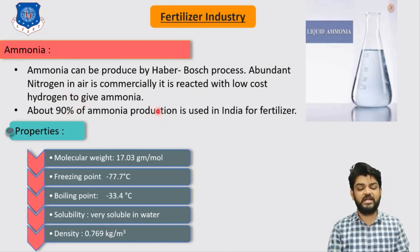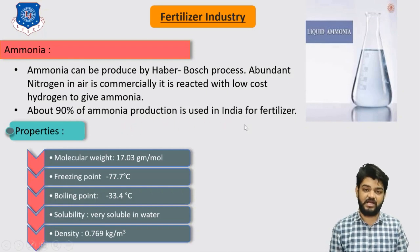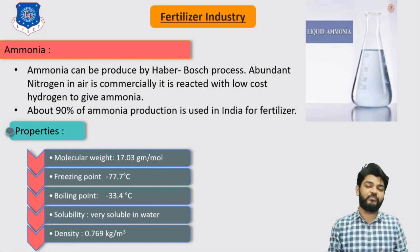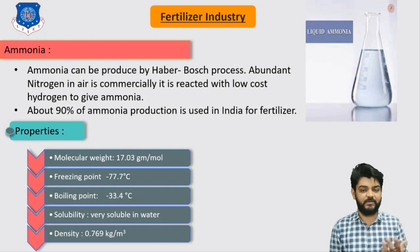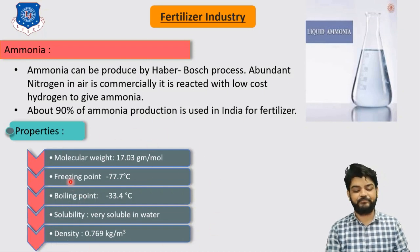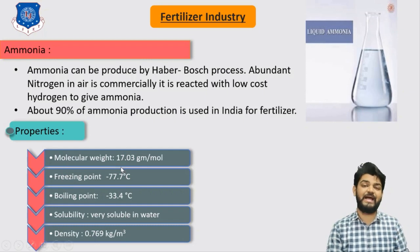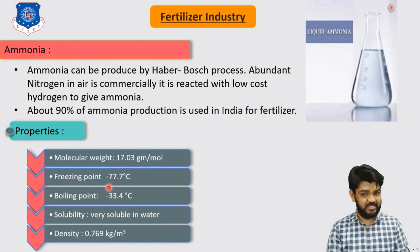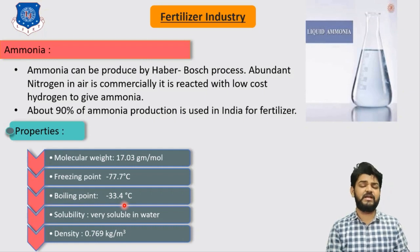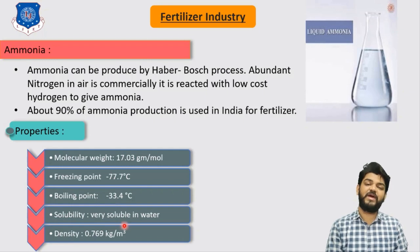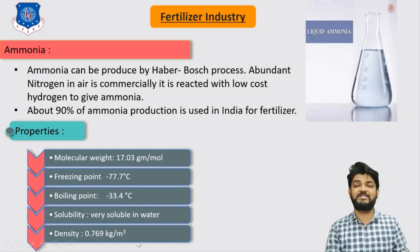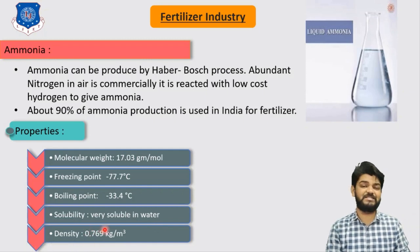Around 90% of the ammonia produced is consumed in the fertilizer industry in India, being used to develop different types of fertilizers. The properties of ammonia: its chemical formula is NH₃ and its molecular weight is 17.03 g/mol. Its freezing point is −77.7°C and its boiling point is −33.4°C, meaning it has a very low boiling point. It is very soluble in water and its density is 0.769 kg/m³.